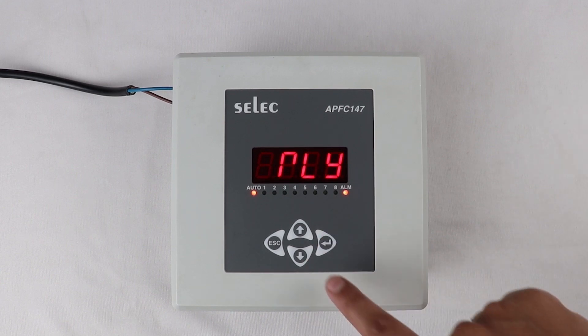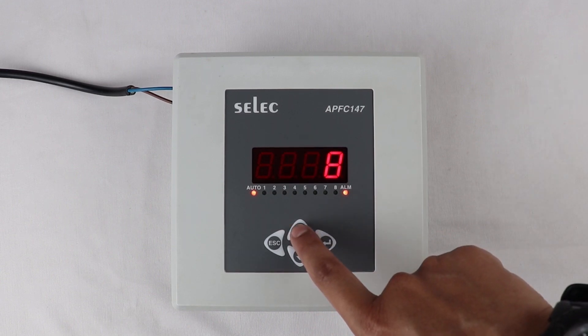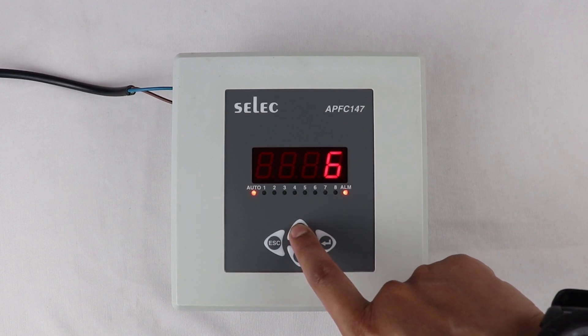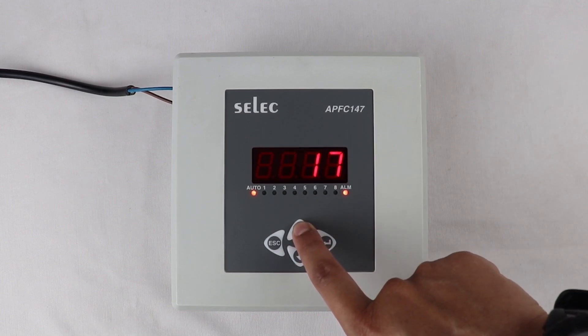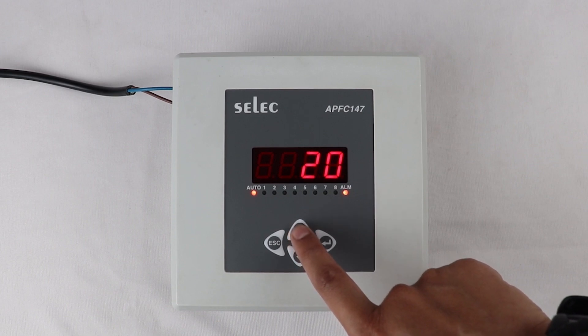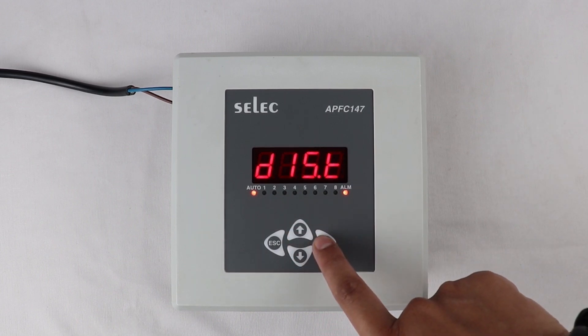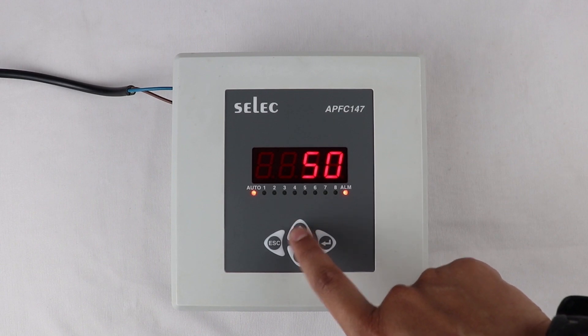Relay count can be set between 1 to 12. Step time can be set between 5 seconds to 999 seconds. Discharge time can be set between 5 seconds to 999 seconds.